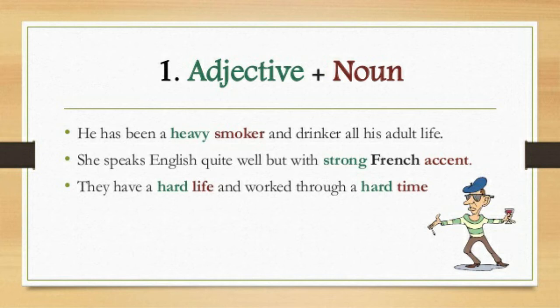The next example: 'They have a hard life and worked through a hard time.' Here 'hard' is an adjective and 'life' is a noun — 'hard life' is adjective plus noun. Similarly, 'hard time' is also a collocation — 'hard' is adjective and 'time' is noun. So the first type we have learned is adjective plus noun.